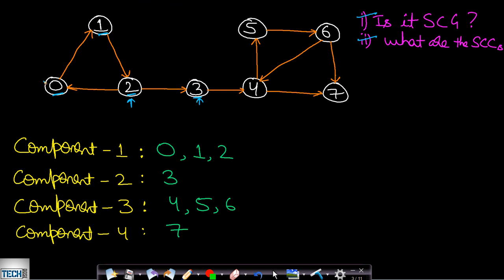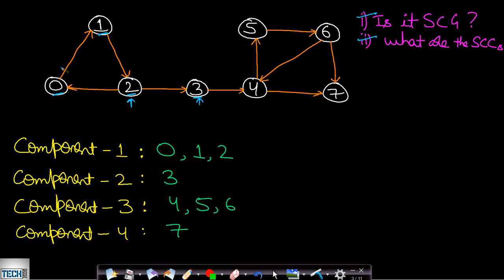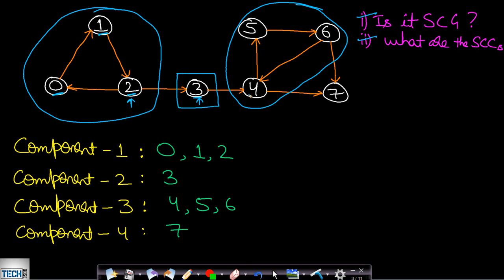We can always divide a given graph into smaller components so that each component is a strongly connected component. One important point: a single node is always an SCC. In the worst case we divide the graph into single-node components, but we want the largest sizes. Looking at this graph, one group of nodes forms an SCC because there is a path between any pair of nodes within it. Similarly, another component is also an SCC. The single nodes 3 and 7 are each an SCC on their own, so there are four SCCs in total.